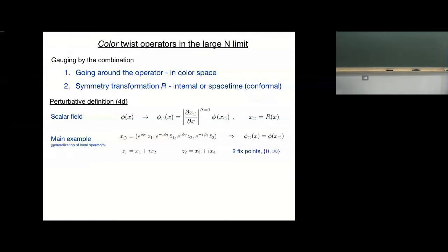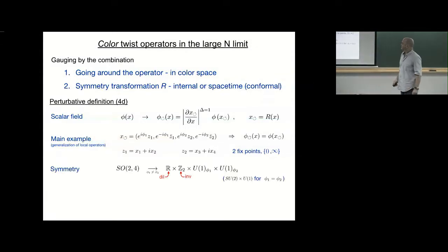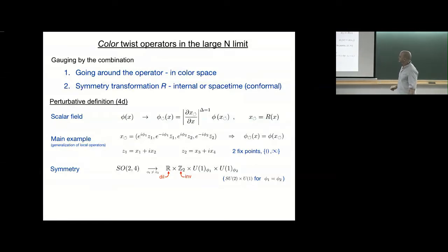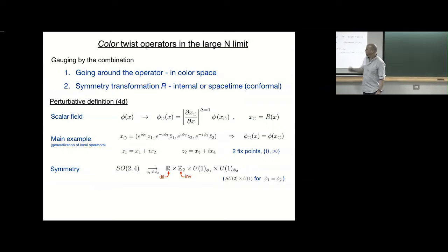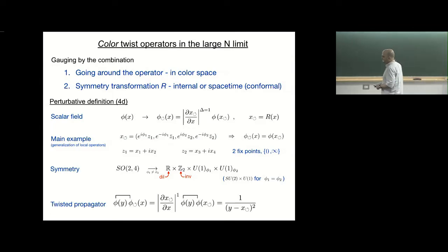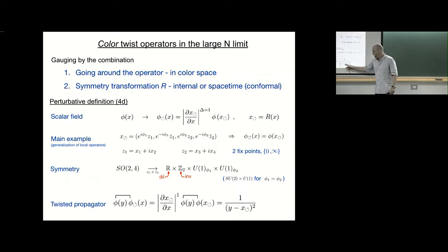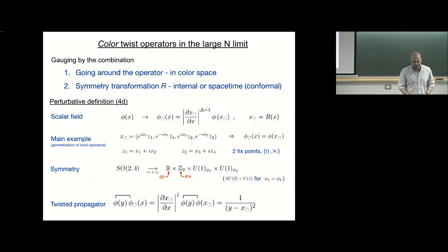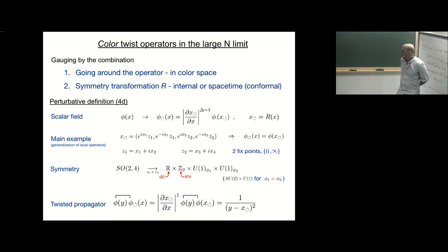When we do that, we are breaking a lot of symmetry. We're breaking the rotation symmetry into two U(1)'s — just rotations in these two planes. But importantly, we don't break dilatation around the fixed point of this rotation. If we do rotation, it's dilatation between zero and infinity. We also keep inversion. A twisted correlator — a propagator — is just a propagator between a scalar and a twisted scalar. In position space it's just one over (y minus rotated x) squared instead of (y minus x) squared. That's all.